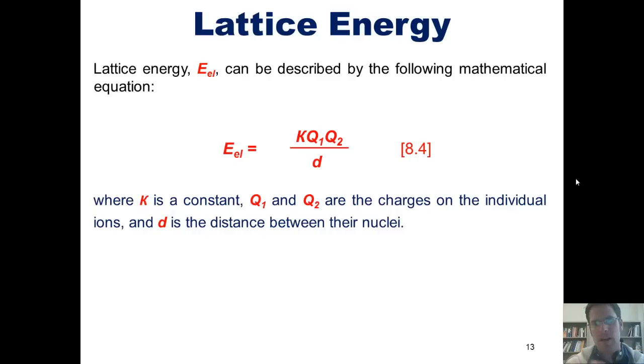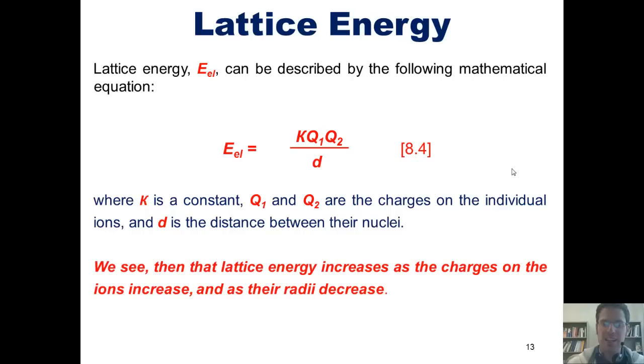Now, if you analyze this formula mathematically, you'll see a couple of things. First of all, if I increase Q₁ and Q₂, it's going to increase the lattice energy. If I increase the bond distance, it will decrease the lattice energy. If I decrease the bond distance, it will increase the lattice energy. And if I decrease the charges Q₁ and Q₂, it will decrease the lattice energy. Thus, we can see that the lattice energy increases as the charges on the ions increase, and as their radii, or bonding distance, decreases. That should make sense logically if you think about it.